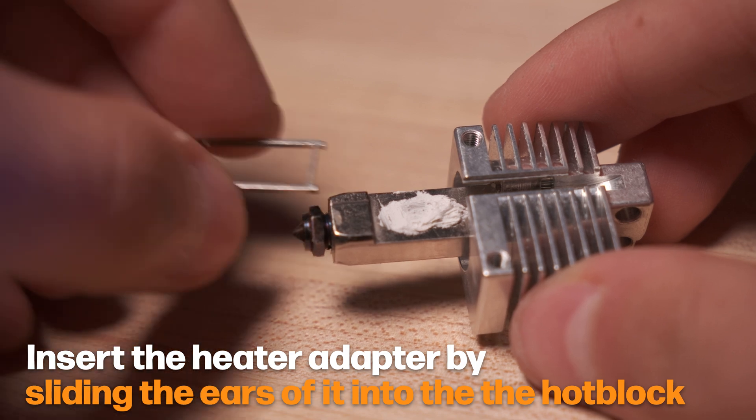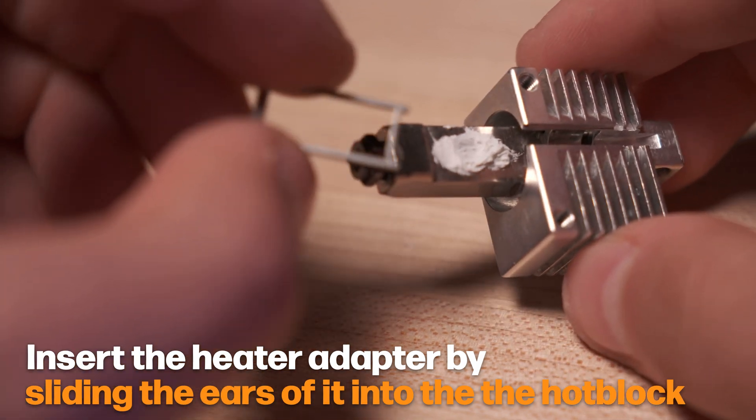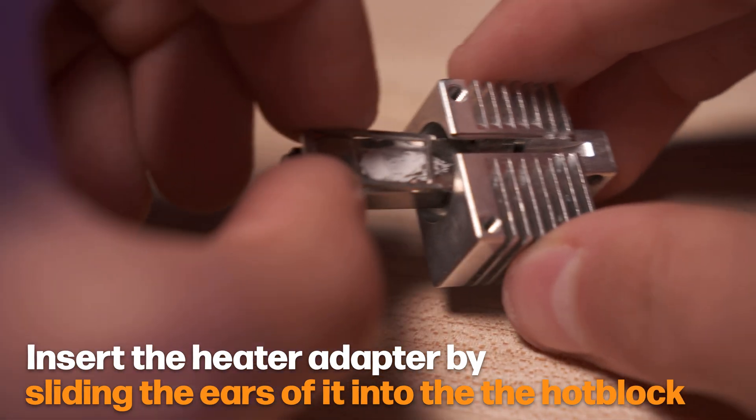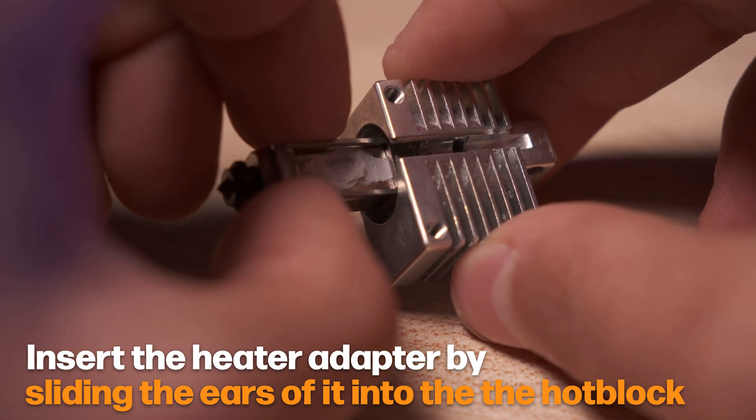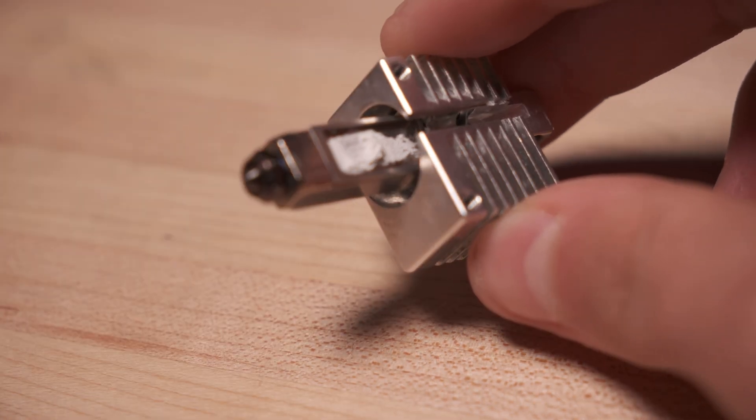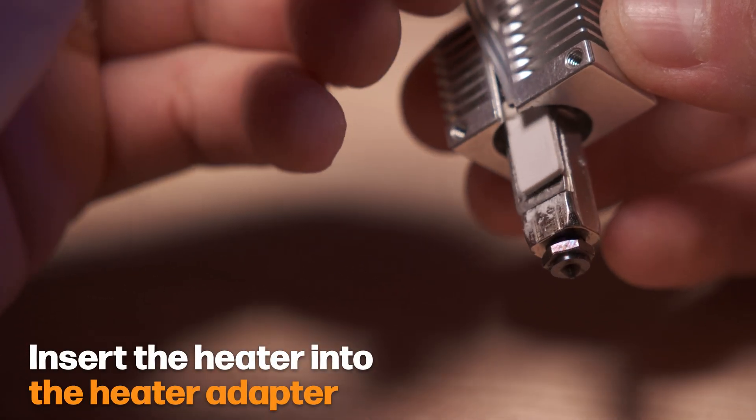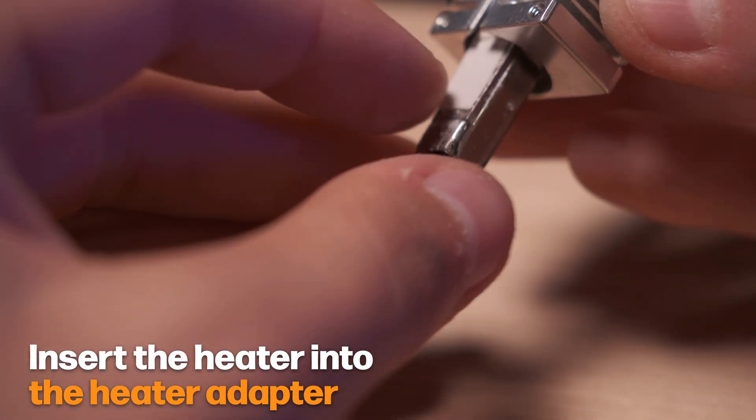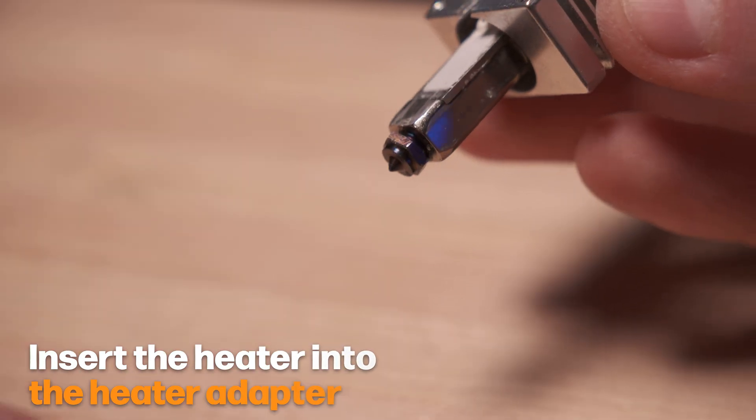Next, place the heater adapter onto this flat surface where you have the thermal paste spread out. Make sure it's seated firmly into the two holes at the top section of the hot block. And then finally install the heater by placing it firmly into the heater adapter and on top of the thermal grease.